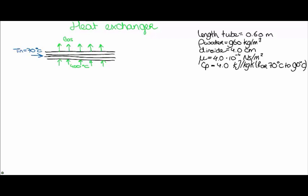I already drew a sketch here. In blue, you see the water flow going into the pipeline, starting at 70 degrees Celsius. When it exits the pipeline, it's 90 degrees Celsius. In green, you see the gas, which starts at 400 degrees Celsius and heats up the water. On the right side of the page you see all the given information, including that the velocity in the pipe is 0.10 meter per second.